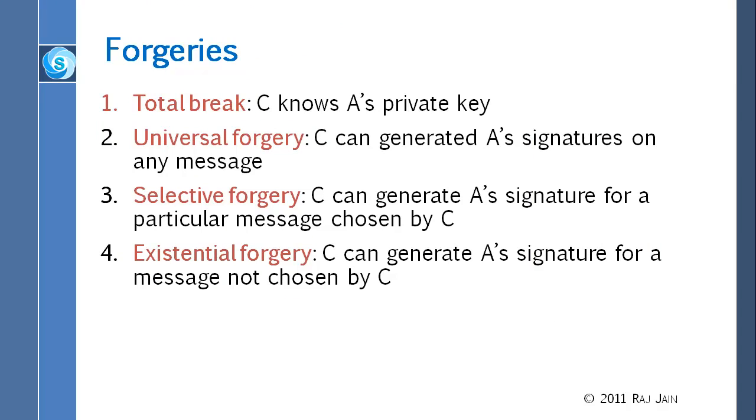So as a result of this attack, what can happen? First of all, somehow C can come to know A's private key. That means the total breakdown. Now you are no good. Your identity has been stolen. Now C can act like A. Second thing is, C doesn't know the private key, but C can generate signatures on any message. Somehow C can generate the signature. And I don't know how they will do it, but again, this is the same paper which talks about the attack, talks about the forgeries. So they say one possibility is that you don't know the key, but you can still generate the signatures.